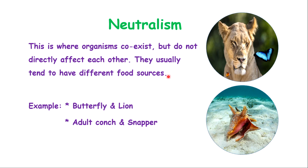The butterfly and the lion is a great example of a neutralistic relationship. Another example is an adult conch grazing on algae at the bottom of the ocean while a snapper searches for a different type of food. They are in the same ecosystem and environment but have no interest in each other at all.